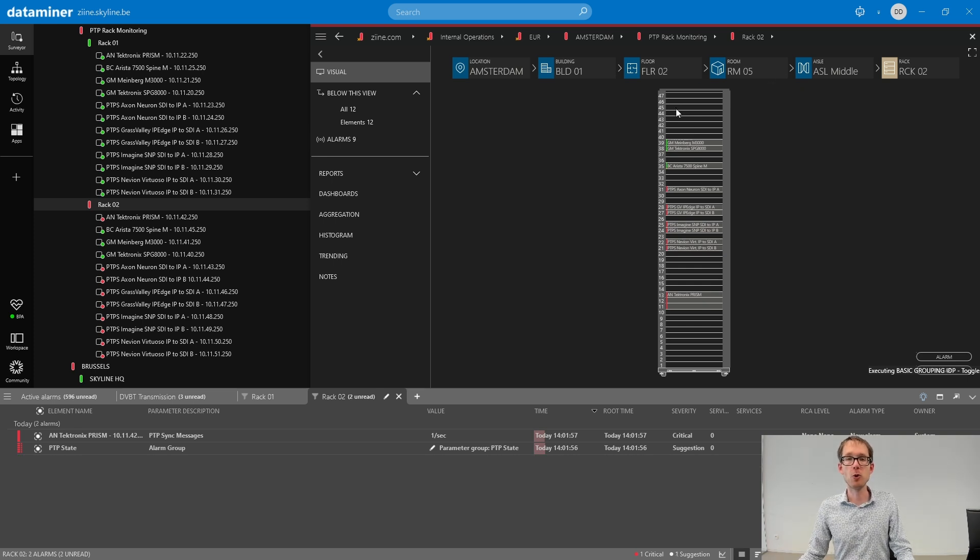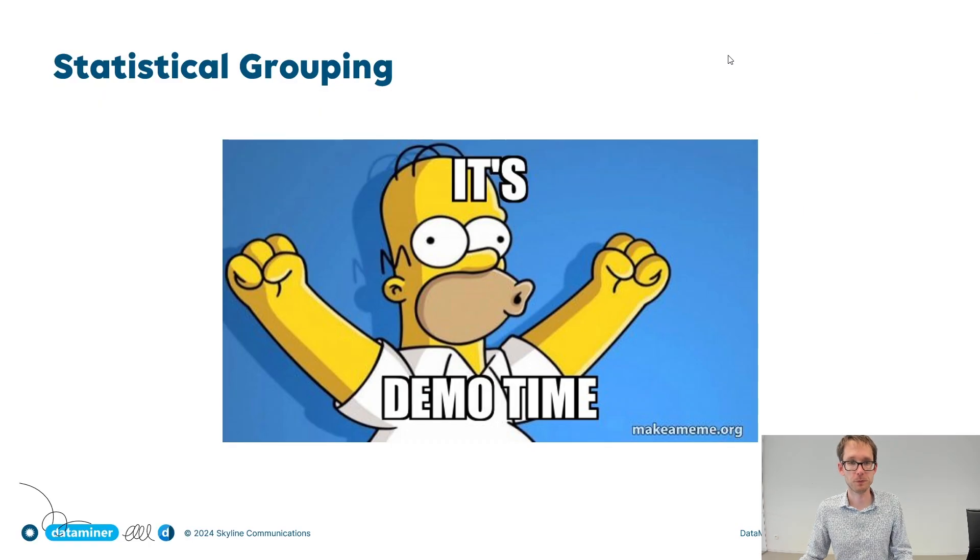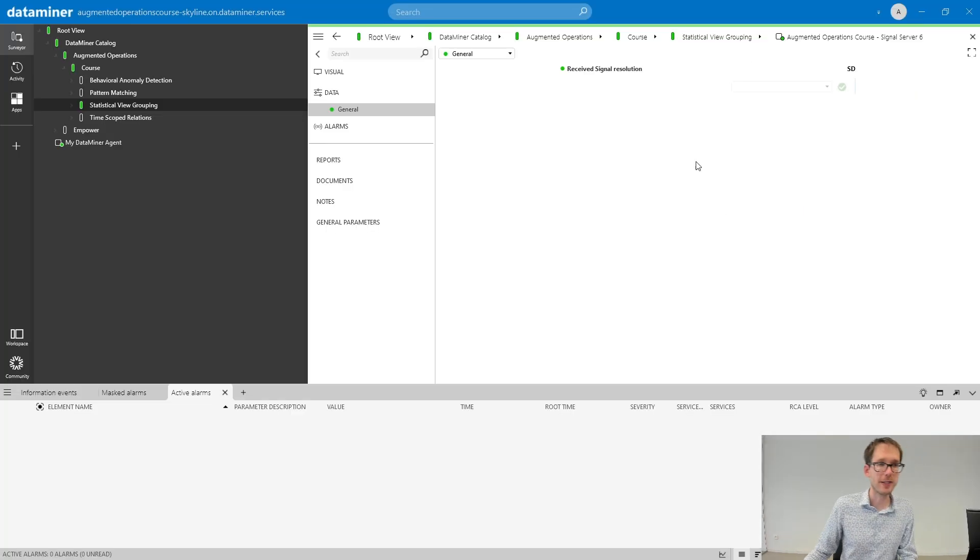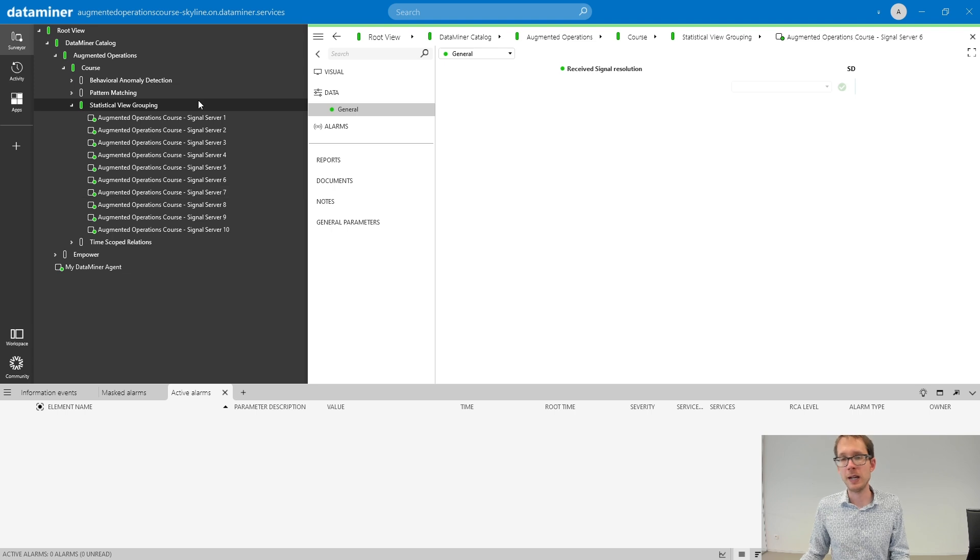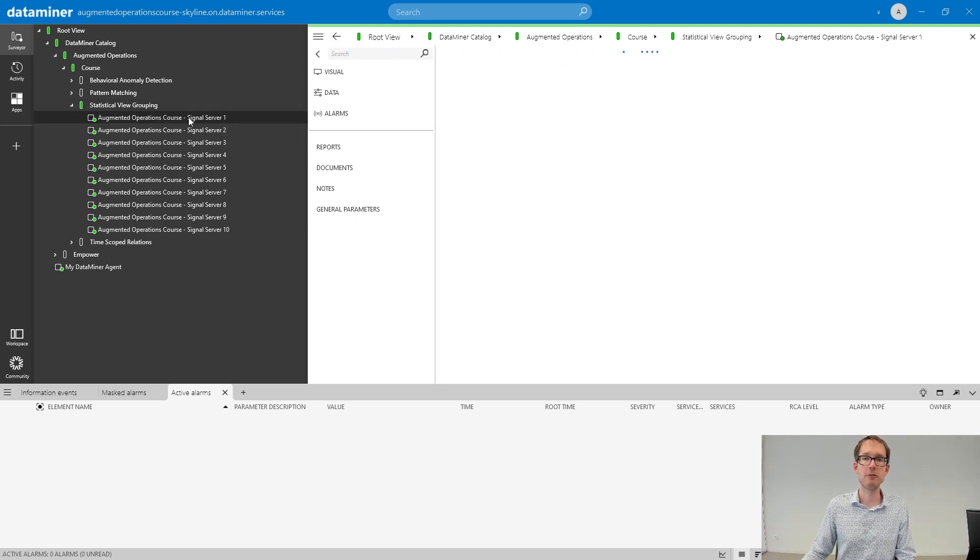And now let me go to the demo that is contained in the accompanying catalog package. If you have installed the accompanying package for this course, you will have a view called statistical view grouping. Now, remember by default, the threshold here is set to 0.25, meaning that you will group alarms on the devices in this view if at least 25% of those devices are in alarm. Let's first create some alarms on just two devices.